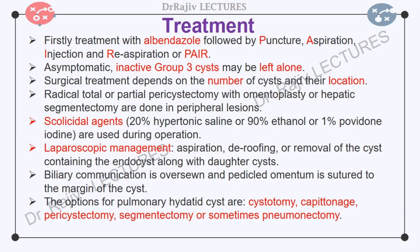Scolicidal agents such as 20% hypertonic saline, 90% ethanol, or 1% povidone iodine are used during operation. These agents may cause sclerosing cholangitis if the cyst communicates with the biliary tree. Laparoscopic management consists of aspiration of cyst contents, deroofing the cyst, removal of the endocyst along with daughter cysts, and injecting povidone iodine or hypertonic saline as a scolicidal agent. Any communication with the biliary tree is oversewn and pedicle omentum is sutured to the margins of the cyst. Cystopericystectomy, or removal of the entire cyst intact, is done for a small superficial cyst of the left lobe.